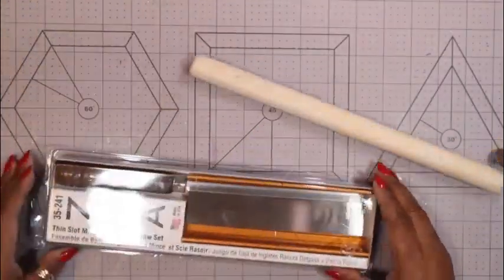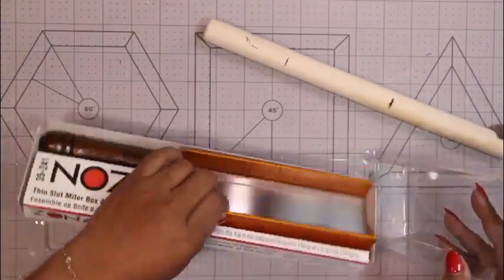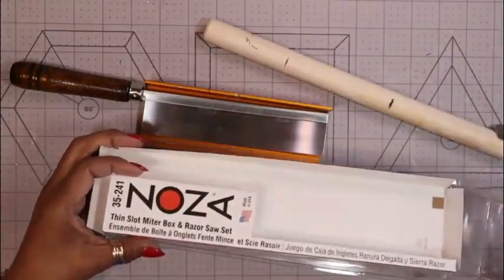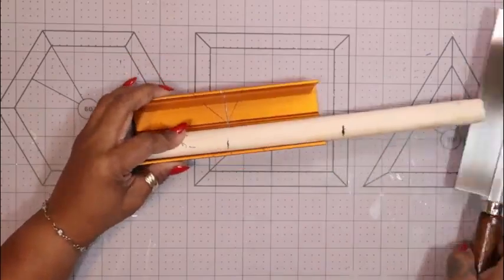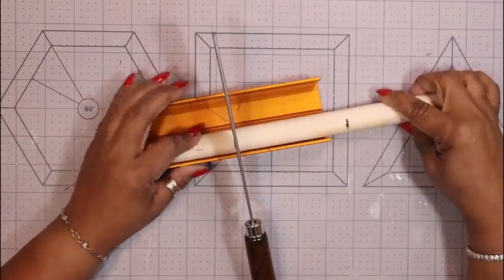Taking my little miter saw box that I picked up off of Amazon a while ago, and this is the name of it, I went ahead and cut all of the markings that I had, trying to make sure that I had everything even.